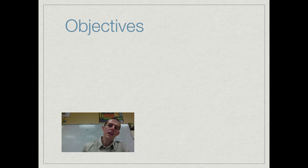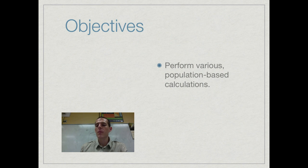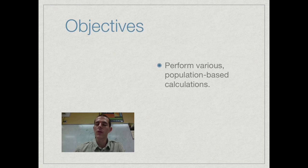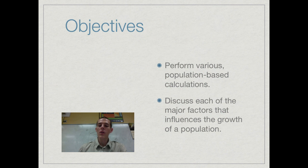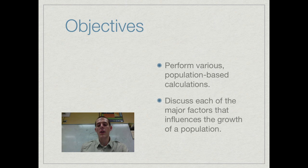By the end of this video, two things that I need you to know or be able to do. The first is to perform various population-based calculations. There are a lot of formulas in today's video — formulas you need to know and be able to use. College Board is going to expect that you can perform calculations with these things, so make sure you write them down and understand them. The second is to discuss each of the major factors that influence the growth of a population. It's going to be a pretty dense video today, so make sure you've got something to drink, you're comfortable, and something to write on.